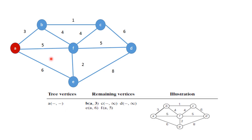From B to A, there is an edge, so the near vertex is A and the distance is 3. From C, there is no edge to A, so near vertex is blank and distance is infinity. From D, there is no edge to A, so blank and infinity. From E, there is an edge to A, so near vertex is A and distance is 6. From F, there is an edge to A, so near vertex is A and distance is 5.